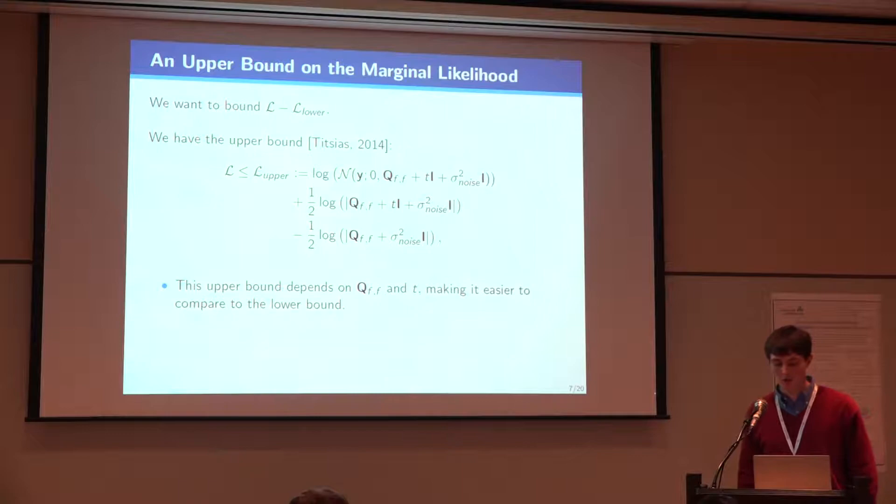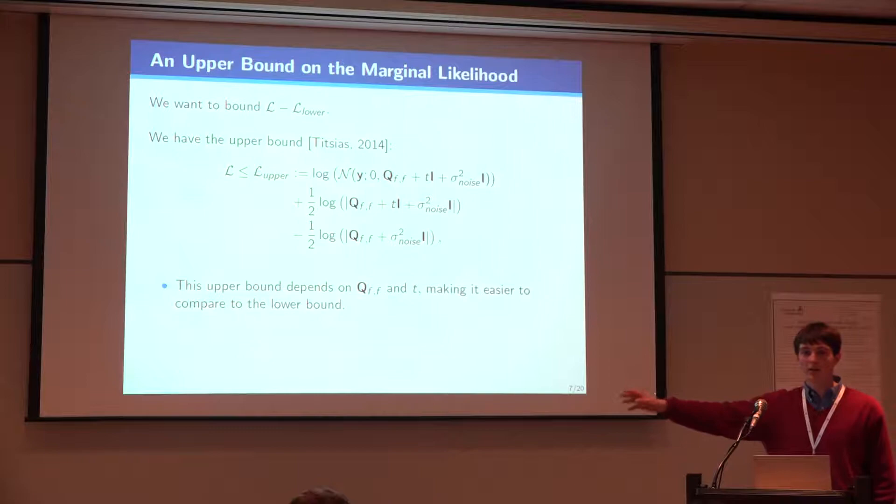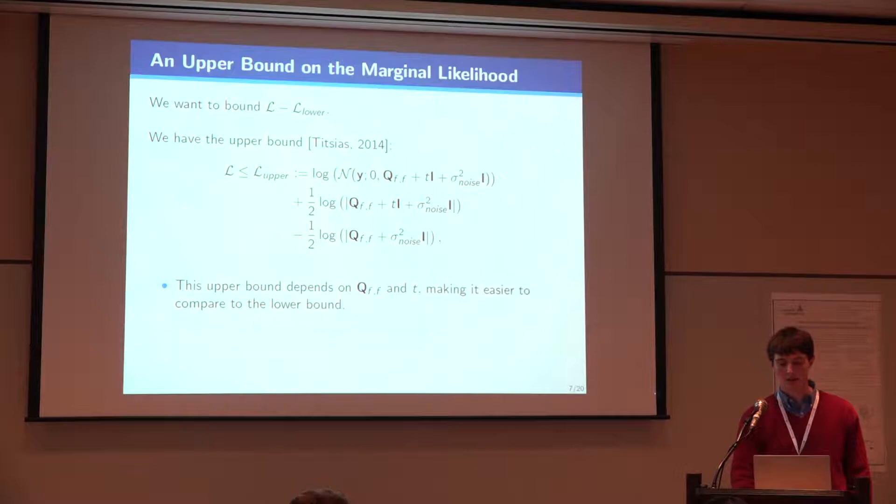So we look instead at this upper bound, which is already in the literature. And now this only depends on our rank M matrix and on this error in trace norm. That makes it a little easier for comparison. So we'll actually bound the gap between this upper bound and the lower bound. And clearly, since the likelihood is between these two, that will also give us a bound on the KL divergence.